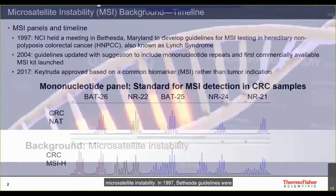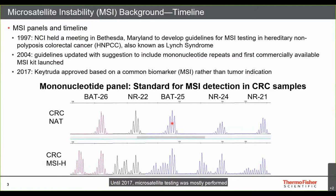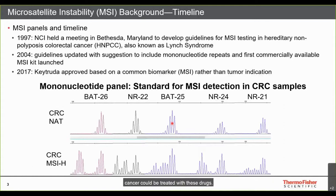In 1997, Bethesda guidelines were established to standardize microsatellite instability testing in Lynch syndrome, an inherited form of colorectal cancer. In 2004, those criteria were revised because the original guidelines included dinucleotide repeats, which were found to be less sensitive. Until 2017, microsatellite testing was mostly used to identify cancers with inherited mutations in DNA mismatch repair genes. With the approval of Keytruda and other immunotherapies, MSI testing became even more prevalent, as any deficient mismatch repair or MSI-high cancer could be treated with these drugs.